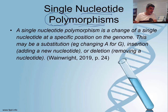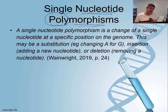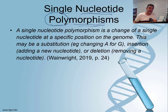We know there are four different types of nucleotides: ones with A's, T's, G's, and C's. What does that have to do with population genetics? According to ATAR notes, a single nucleotide polymorphism is a change of a single nucleotide at a specific position on the genome.